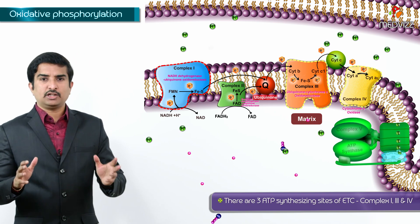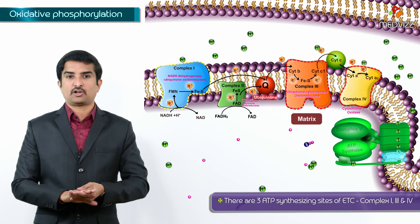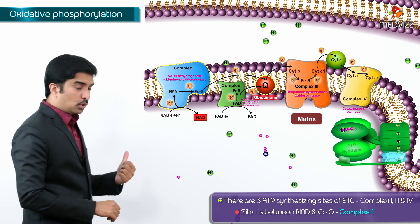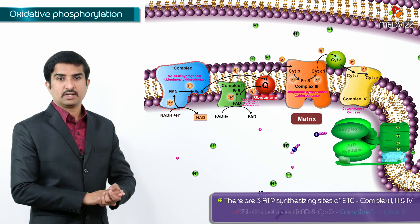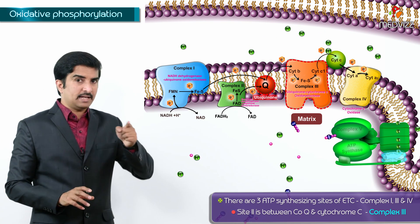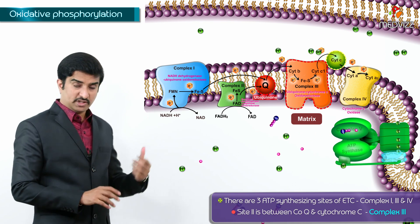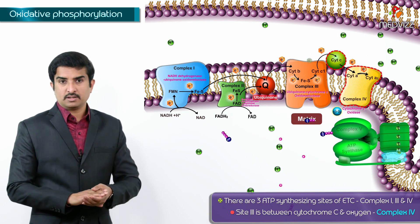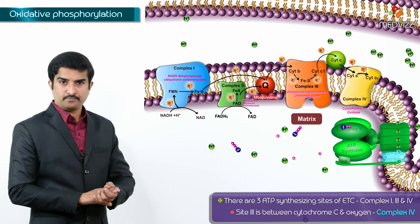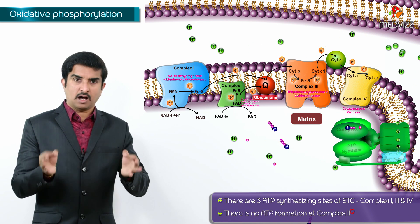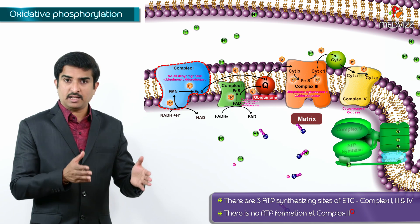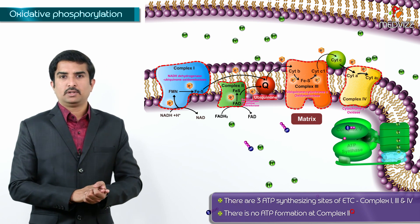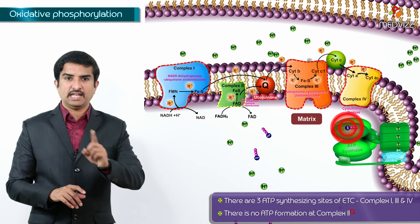There are totally 3 ATP synthesizing sites of the electron transport chain. Site 1 is between NAD and coenzyme Q, that is complex 1. Site 2 is between coenzyme Q and cytochrome C, which is complex 3. And site 3 is between cytochrome C and oxygen, that is complex 4. The ATP synthesizing complexes in the electron transport chain are complex 1, complex 3, and complex 4. Complex 2 is not producing any ATP.